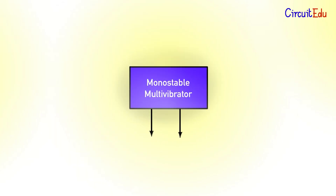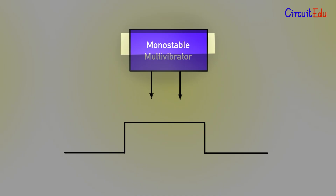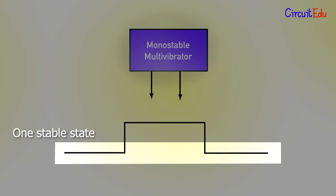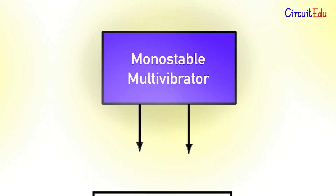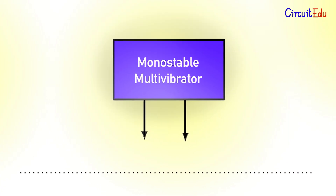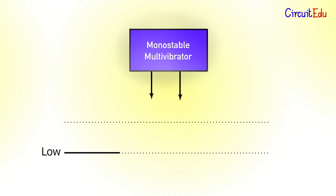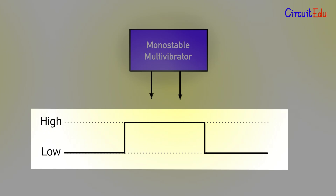A monostable multivibrator is a circuit that can produce a voltage pulse. The name monostable means the circuit has only one stable state. The circuit is normally stable and outputs a low voltage. But when the circuit is triggered, such as from a push button, it enters an unstable state and outputs a higher voltage. After some time, the circuit automatically returns to its stable state and the output becomes low again.